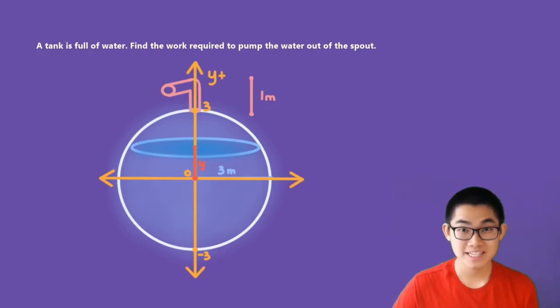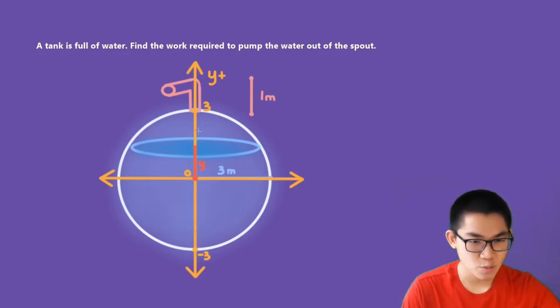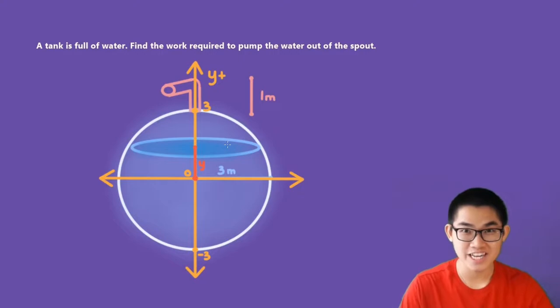To empty this tank, all we have to do is move every single layer of water from here to here. This is just one layer of water, but you can imagine that there are many layers of water in here, and we want to move it to the top of the tank.